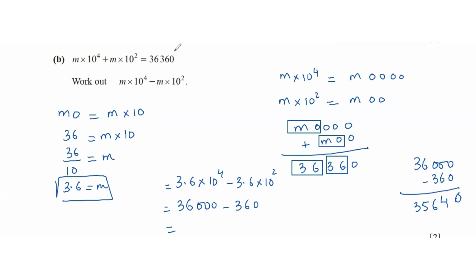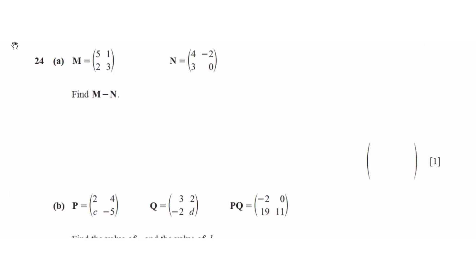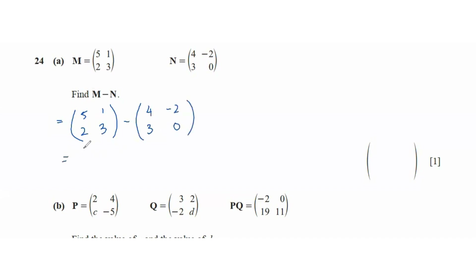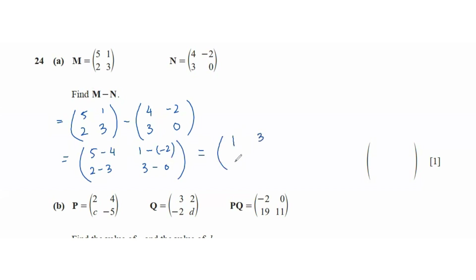Question 24: find M minus N. That's the matrix (5,2;1,3) minus (4,3;negative 2, 0). Subtracting element by element: 5 minus 4, 2 minus 3, 1 minus negative 2, 3 minus 0, giving the matrix (1, negative 1; 3, 3).